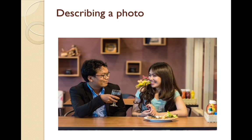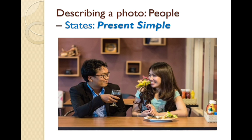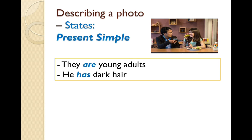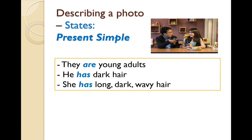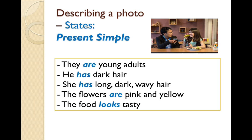Let's look at this photo to start with. To talk about states, we use the present simple tense. For example: they are young adults; he has dark hair; she has long dark wavy hair; the flowers are pink and yellow; the food looks tasty; the walls are pink; they are in a restaurant.